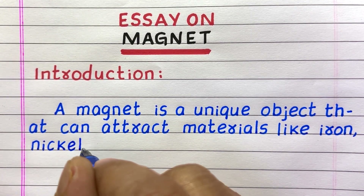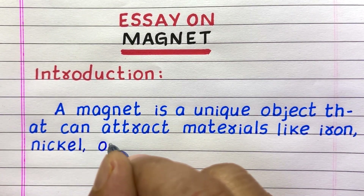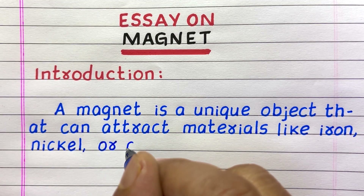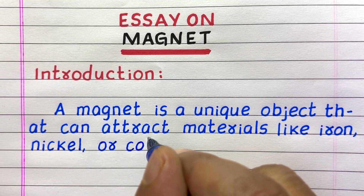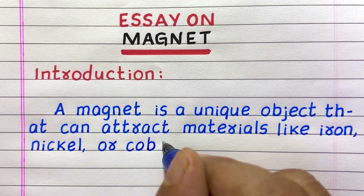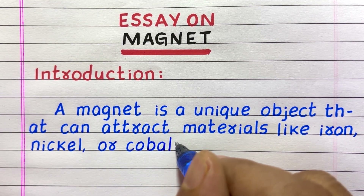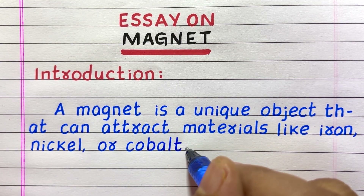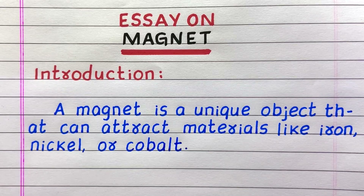Introduction: A magnet is a unique object that can attract materials like iron, nickel and cobalt.